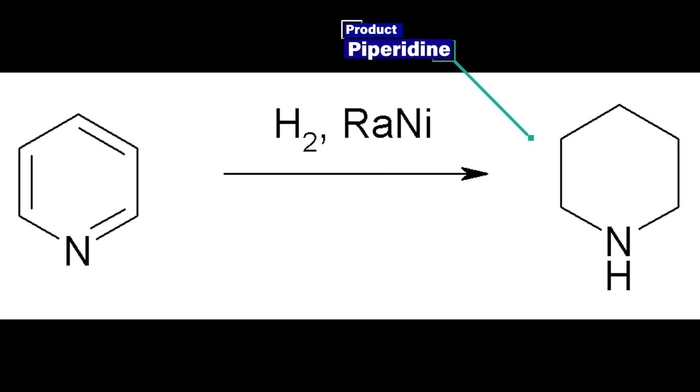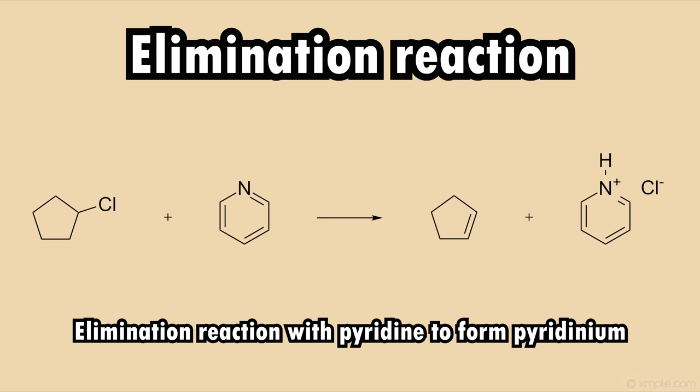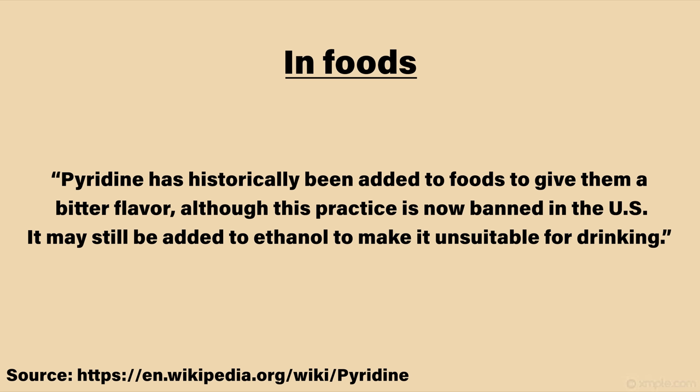Pyridine is quite useful and it's used in a lot of reactions. One is the hydrogenation of pyridine which goes into piperidine. Another one is an elimination reaction, which pyridine goes into pyridinium. It was also used as a bittering agent until the USA decided to ban it. It may still be added to ethanol, but that's kind of a wild thing to do. I guess that's why they did it so we wouldn't drink it.